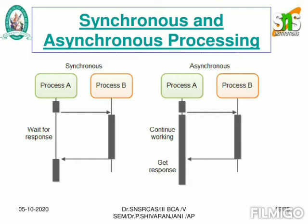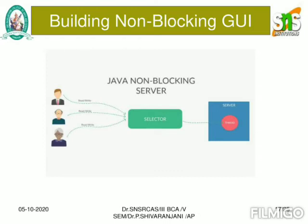In the synchronous case, when Process A makes a request, the server searches for the response. When Process B enters and makes a request, the server will not provide any response to Process B because it is a synchronous process. In the asynchronous case, when Process A and B make requests at the same time, the server provides a response to both within a fraction of time. This is the concept of non-blocking guides in Java programming.